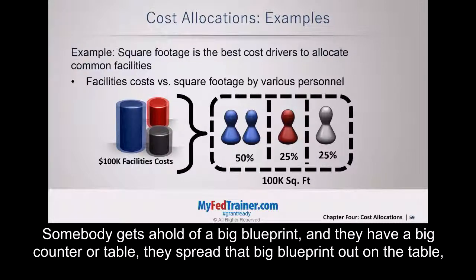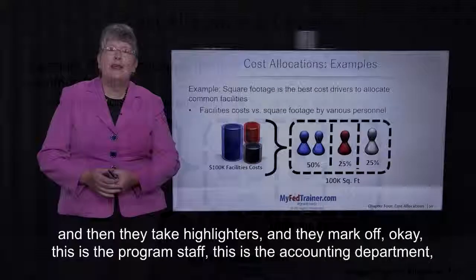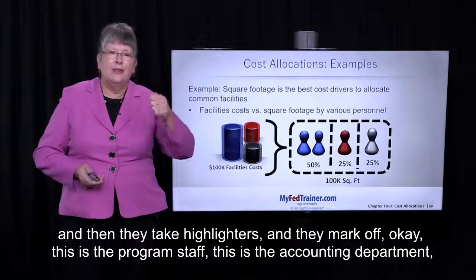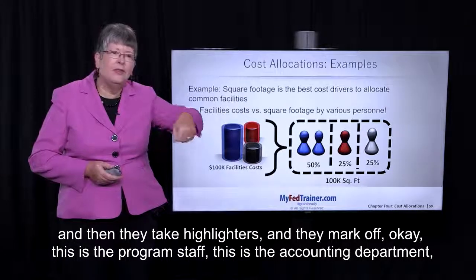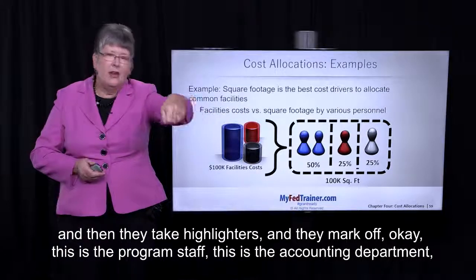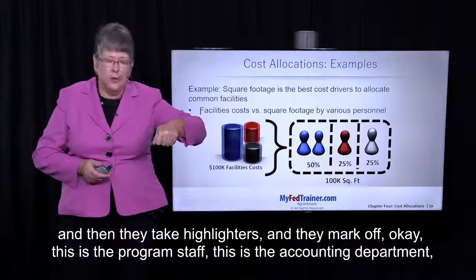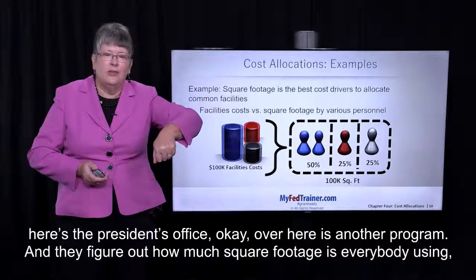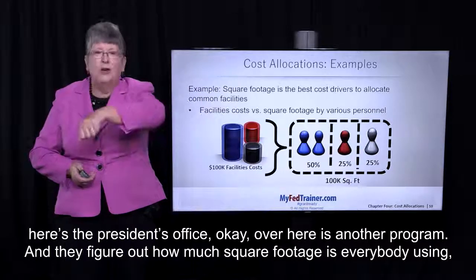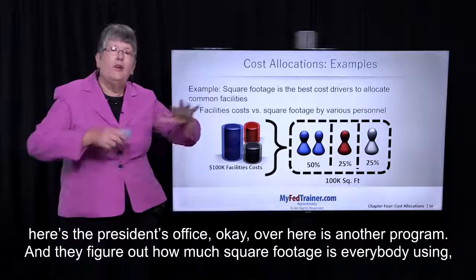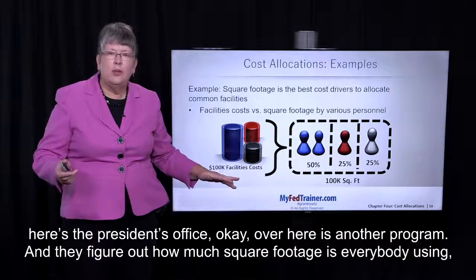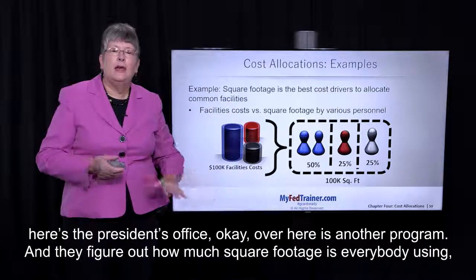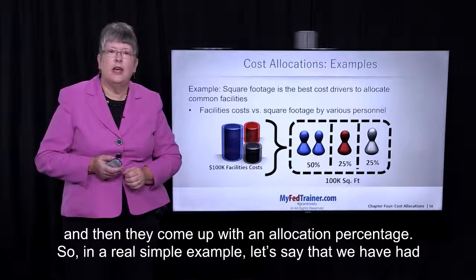Somebody gets a hold of a big blueprint, and they have a big counter or table, and they spread that big blueprint out on the table. Then they take highlighters and they mark off: this is the program staff, this is the accounting department, here's the president's office, over here is another program. And they figure out how much square footage everybody is using, and then they come up with an allocation percentage.